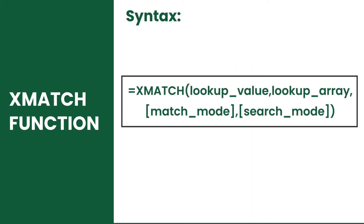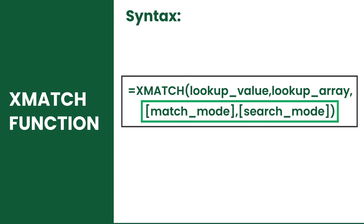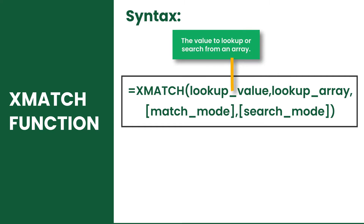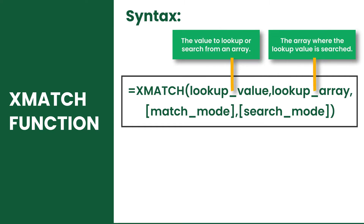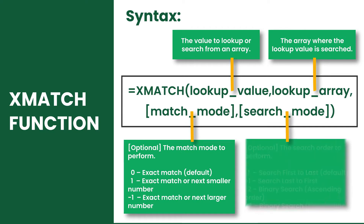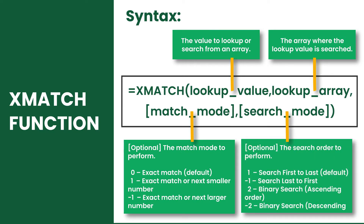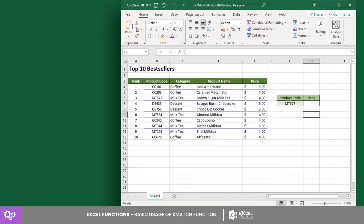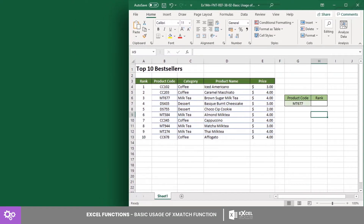This function runs on four arguments where only the first two are required and the other two are optional. It searches for the lookup value in the lookup array, selects a match based on your preference and searches in the direction you want, then returns an integer indicating the position of the match found in the lookup array.